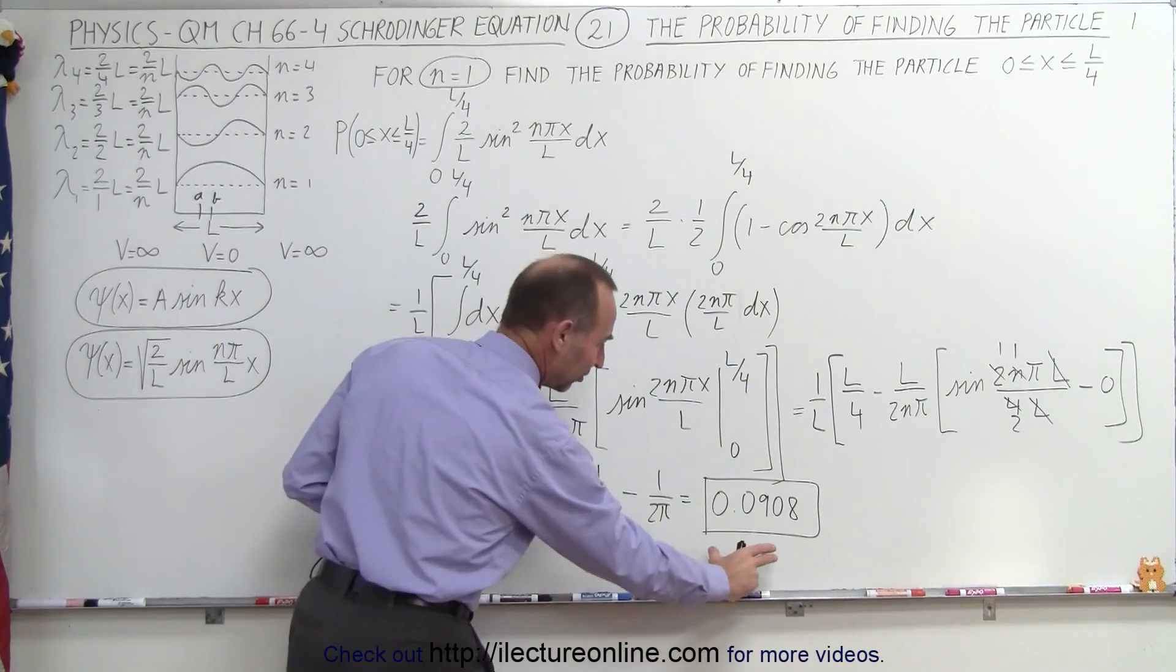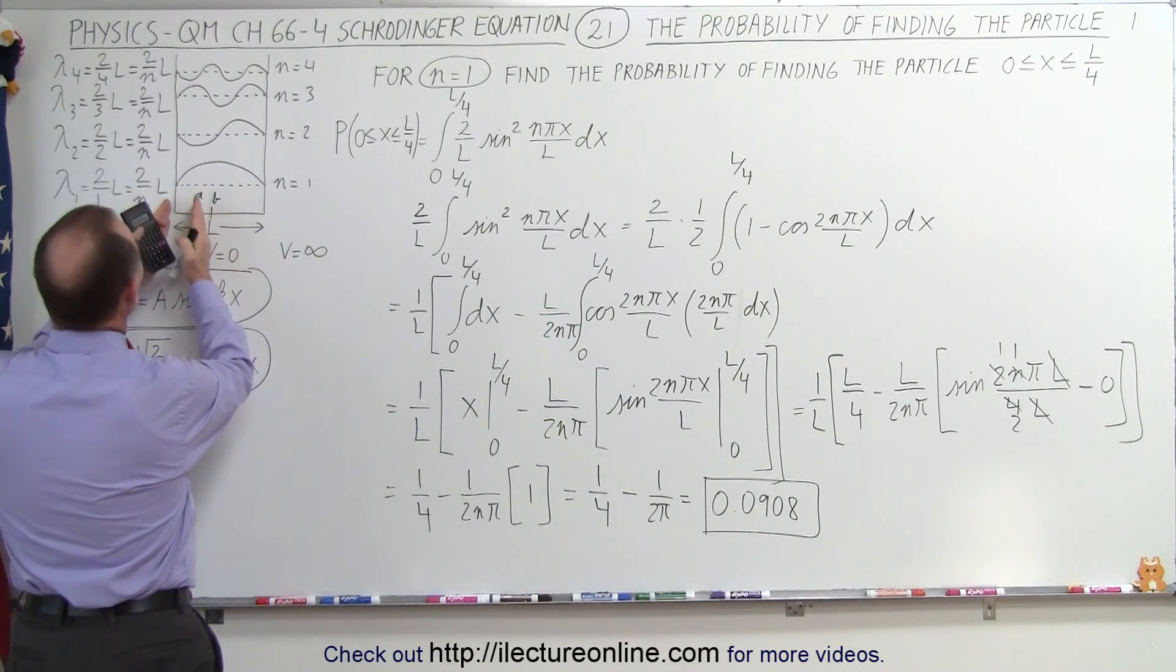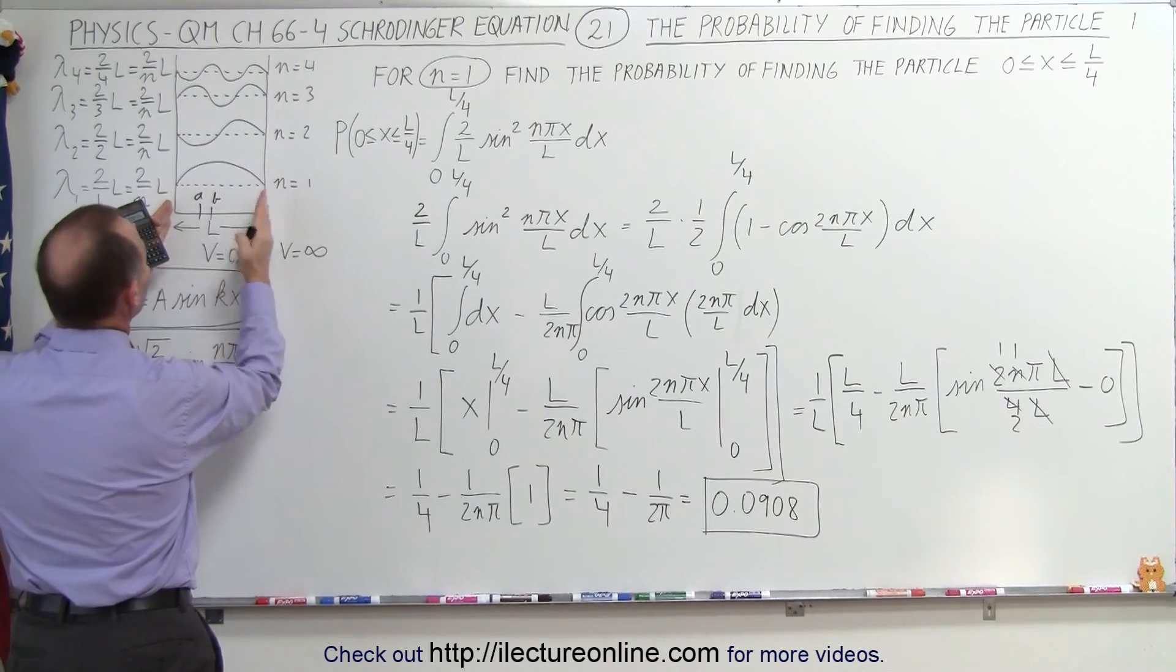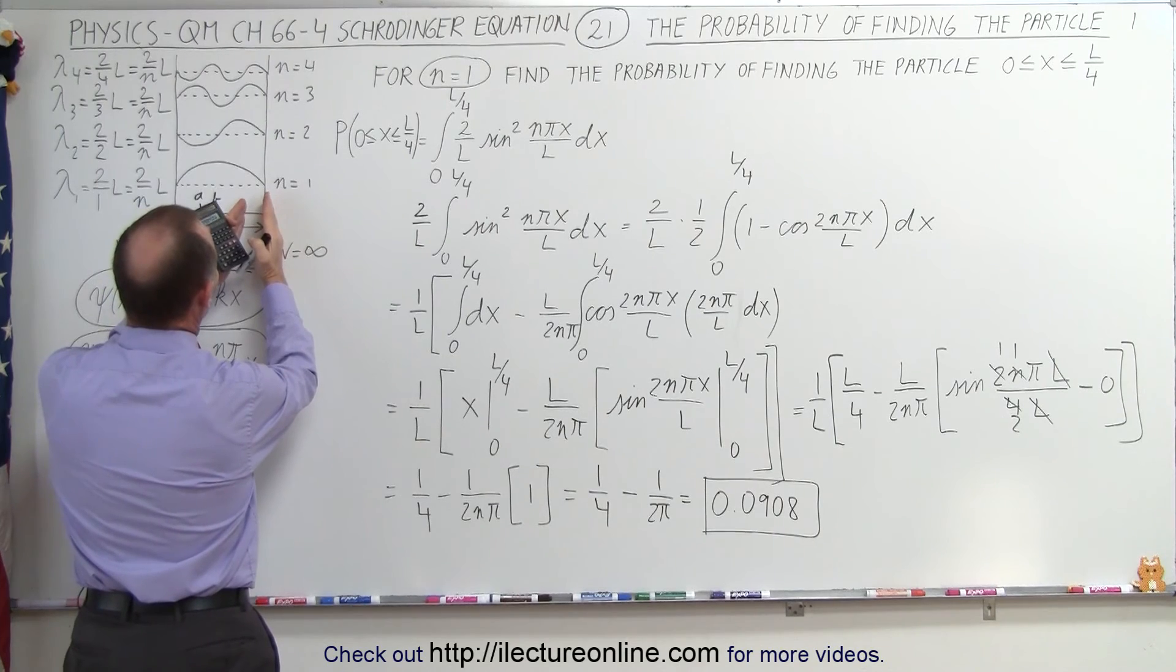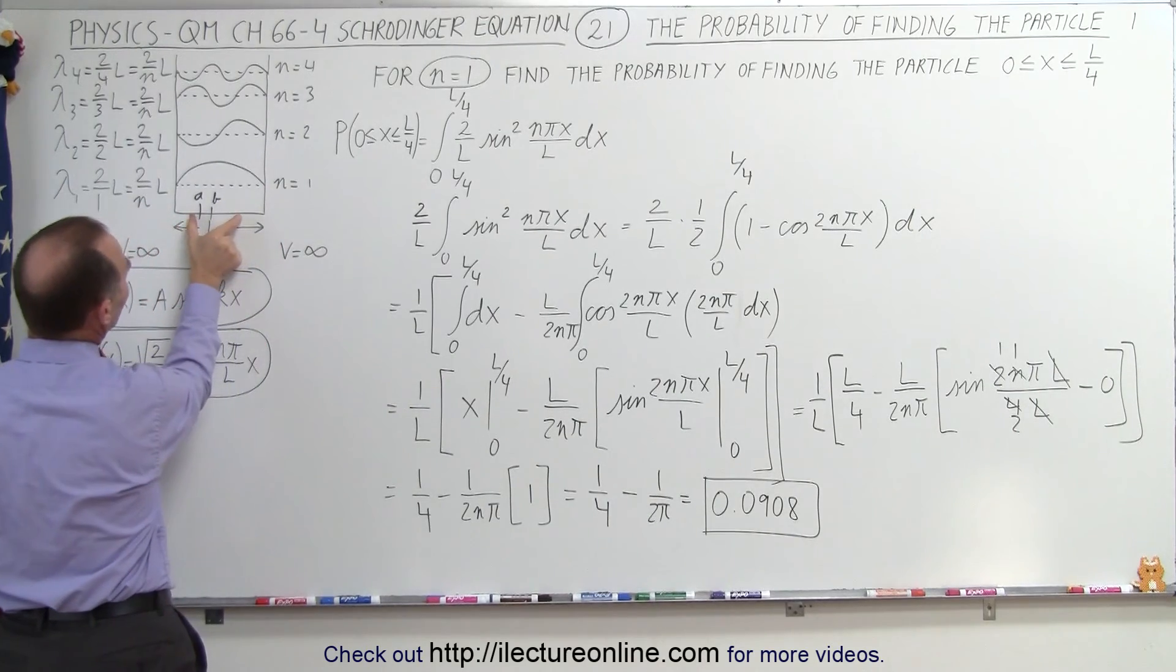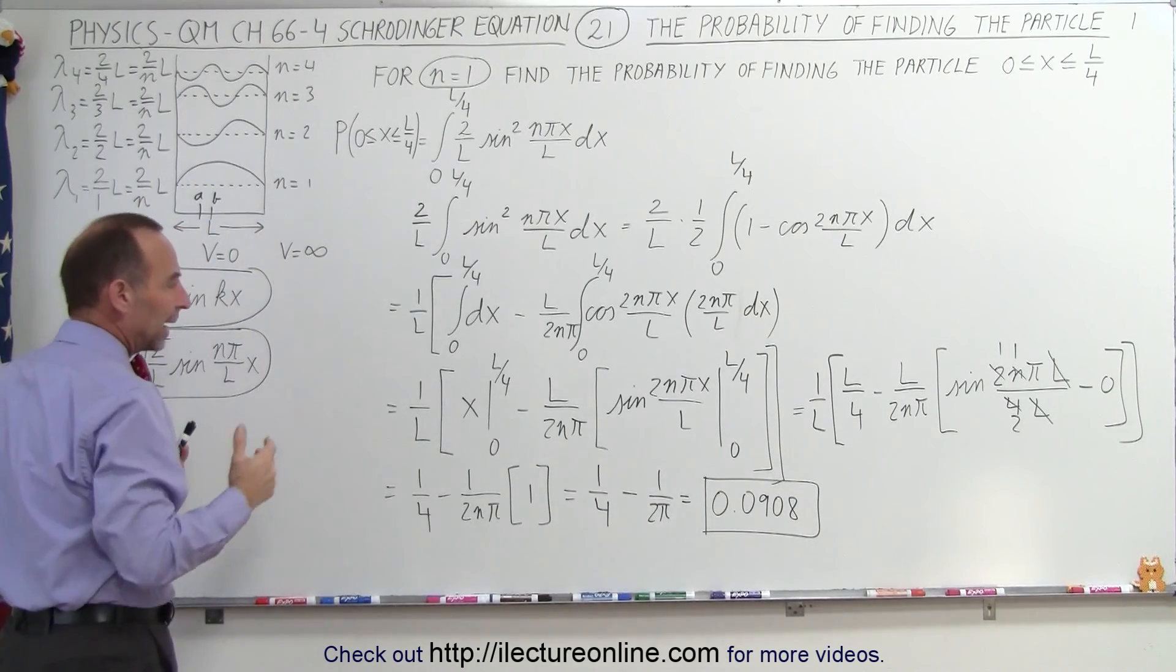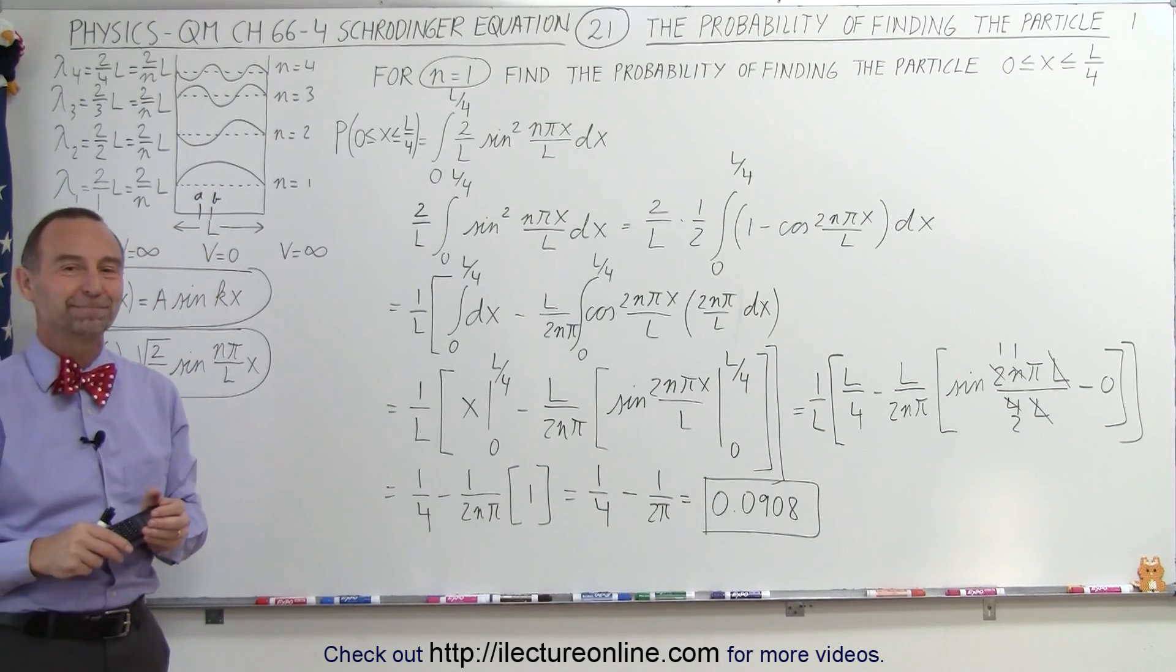So the way we can interpret that is here that this is almost 10%, so we could say that it's about 10% probability we'll find the particle in the first quarter of the path from 0 to L. Since there's perfect symmetry here, we can expect that about 10% probability of finding the particle from the third quarter to the very end of the well right here, and then about 80% probability of finding the particle in the middle from a quarter L to three-quarters L. And that's the way we can interpret our results. And that's how it's done.